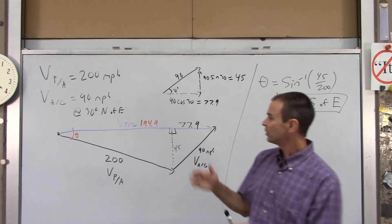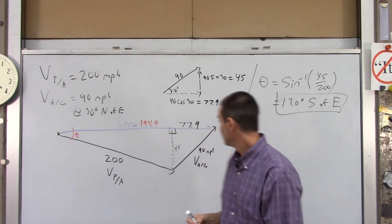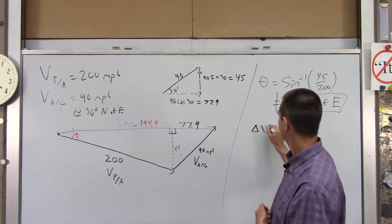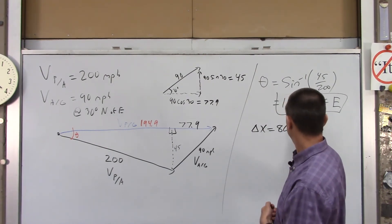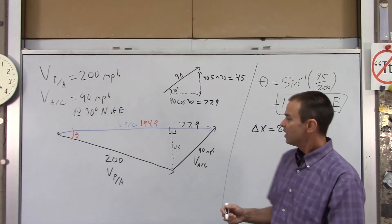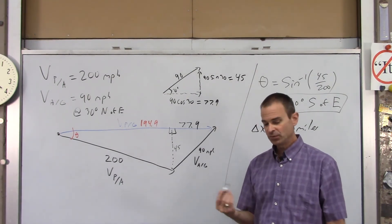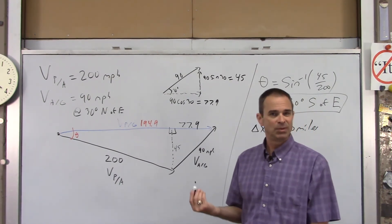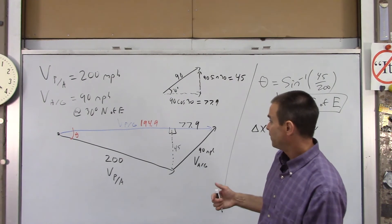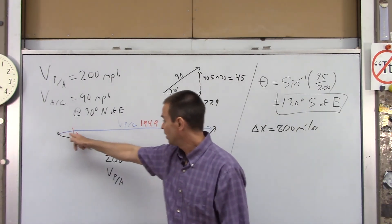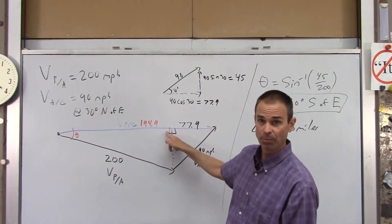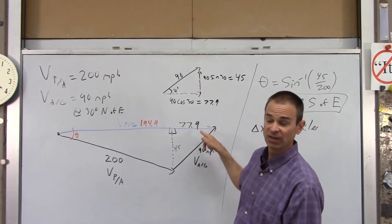Now how long would it take them to go 800 miles due east. So we know our delta x is 800 miles. So we need Vx. If we know delta x and we know Vx, then we got time. Well, Vx is simply the addition of this thing, which is 194.9, plus the wind, which is 77.9.